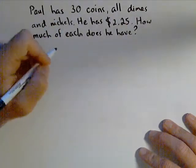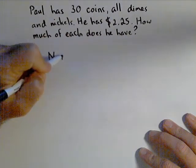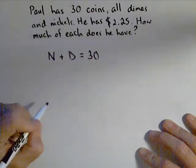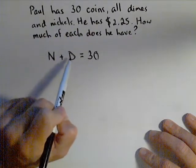Well, he has a total of 30 coins. So if we let N be the number of nickels and D be the number of dimes, then N plus D has to equal 30. So there's our amount equation.